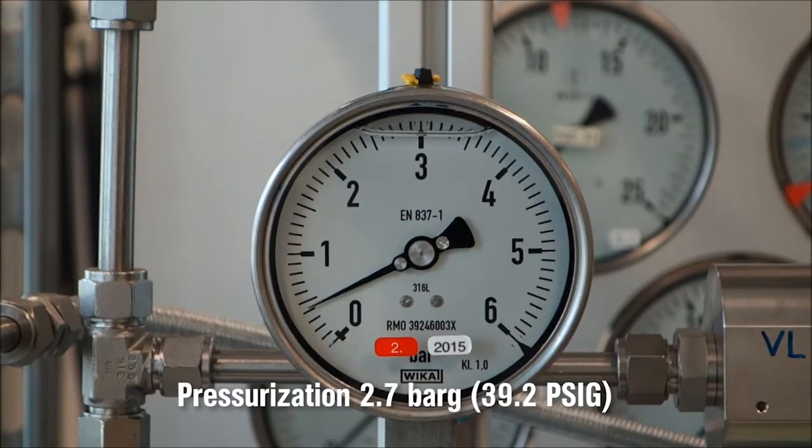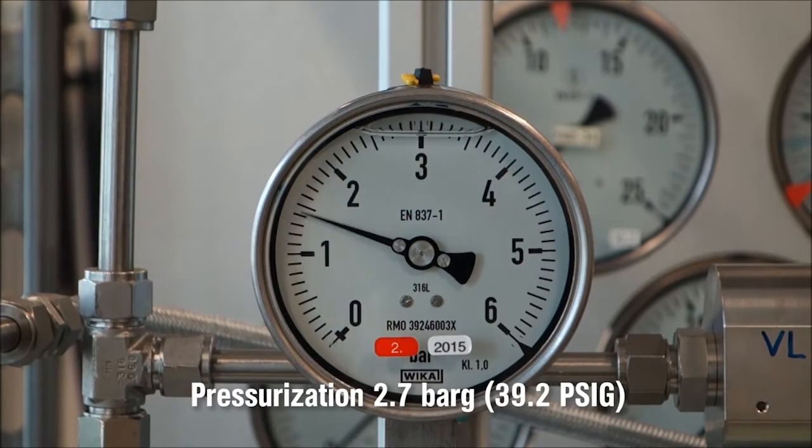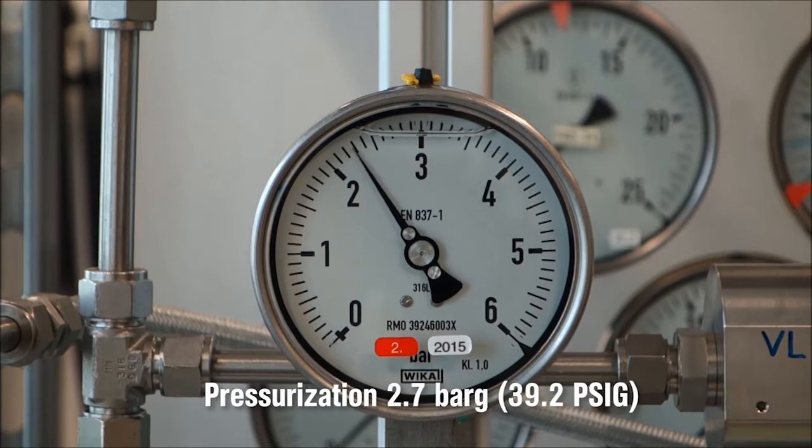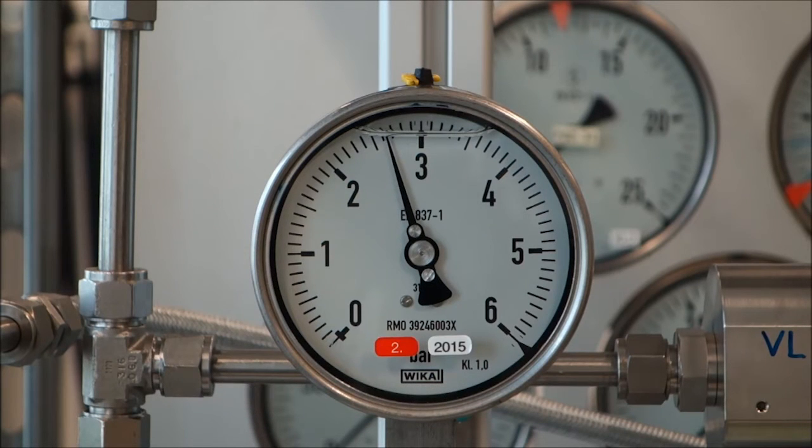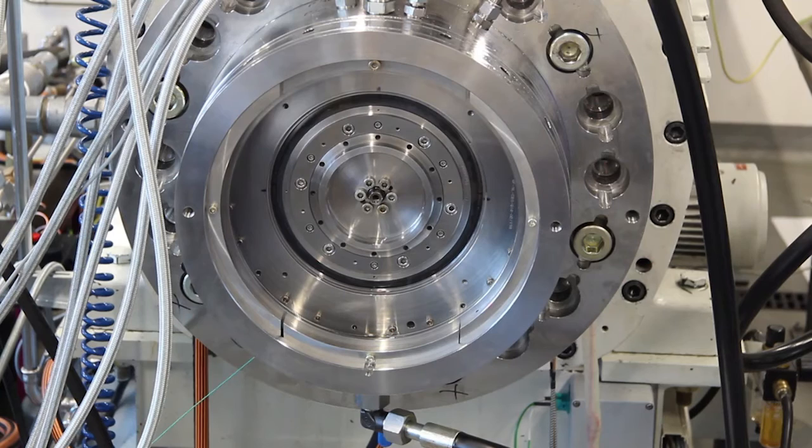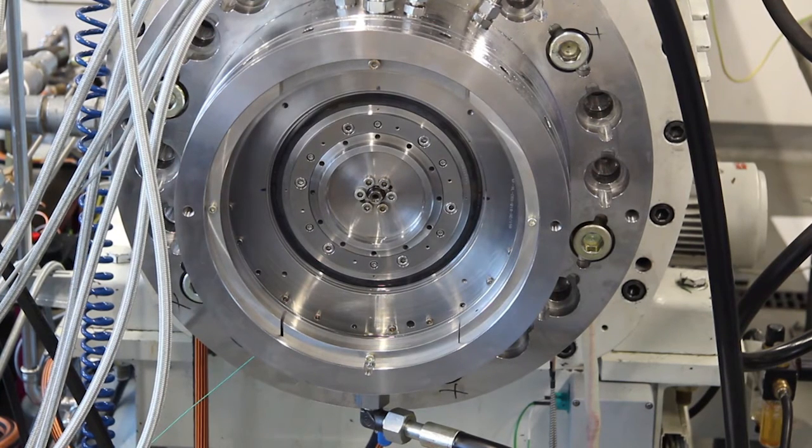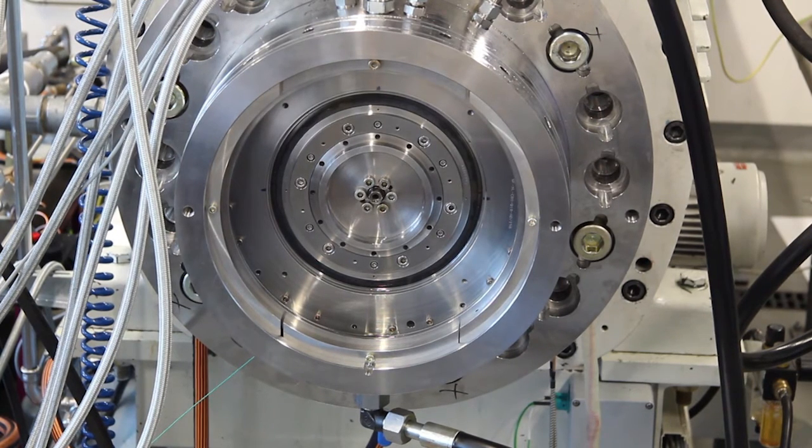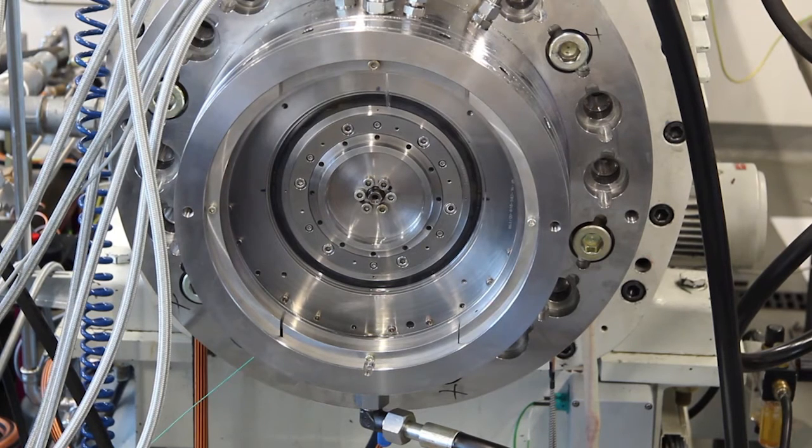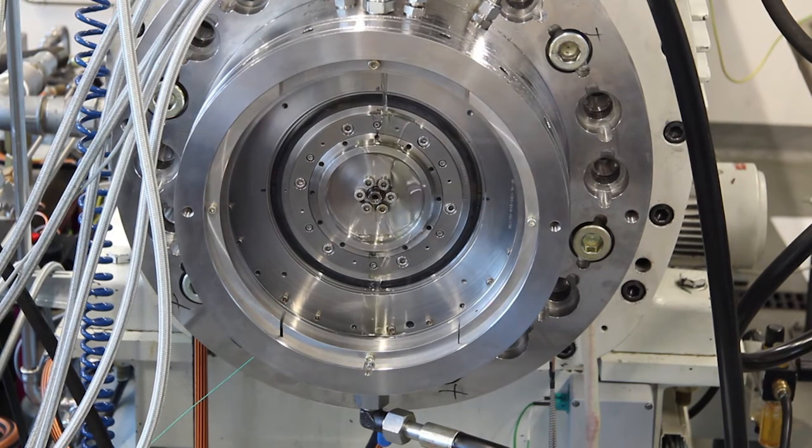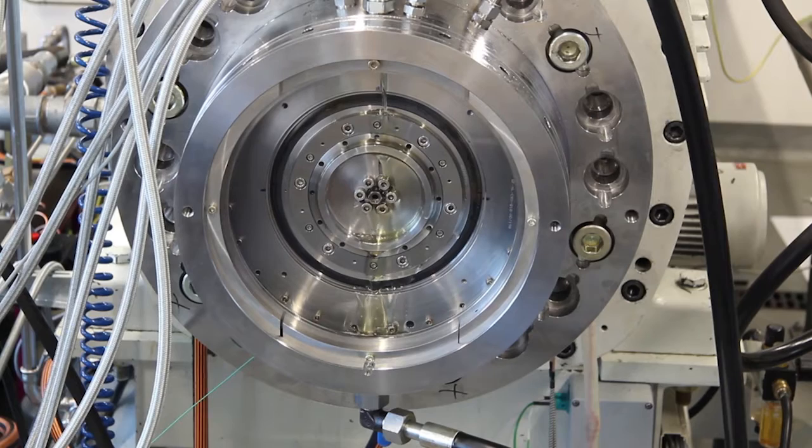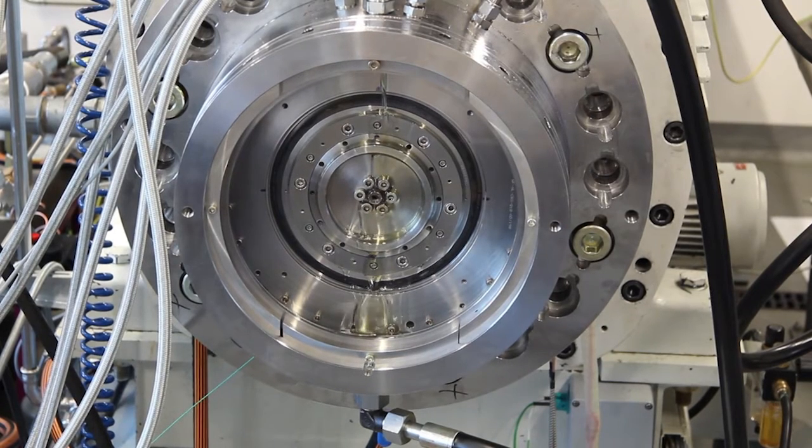The seal first undergoes a dynamic run under normal operational conditions. The processes in the bearing oil housing can be observed through an acrylic glass window. The system is pressurized to 2.7 bar gauge, which is equivalent to 39.2 psi gauge. The oil flow to the bearing housing is 8 liters per minute.